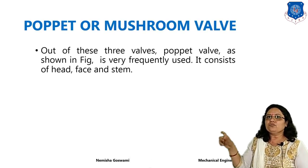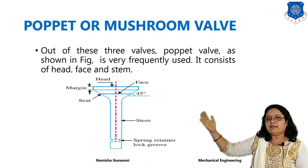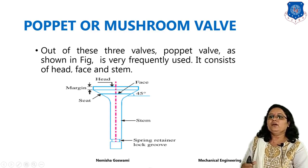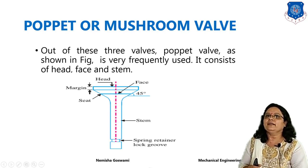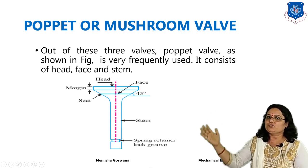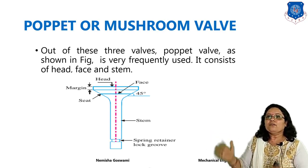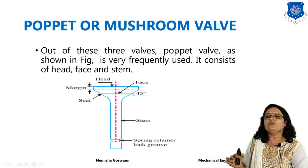The poppet or mushroom valve looks like this — it consists of a head, face, seat, stem, and spring retainer. These are the basic parts of the poppet or mushroom valve. We have to design each and every part — we need to find the diameter of the seat (DS), the diameter of the head, and design the face.